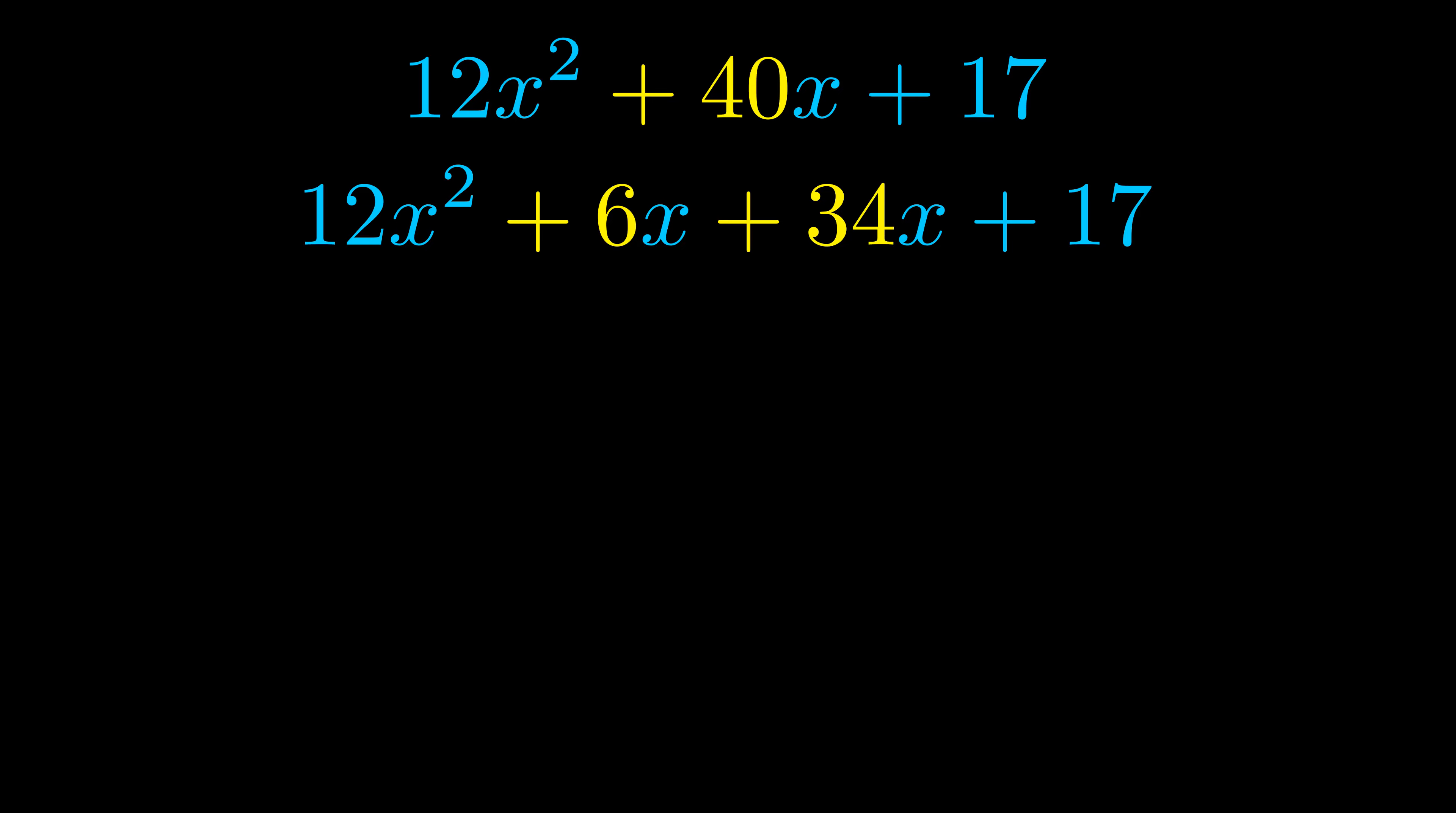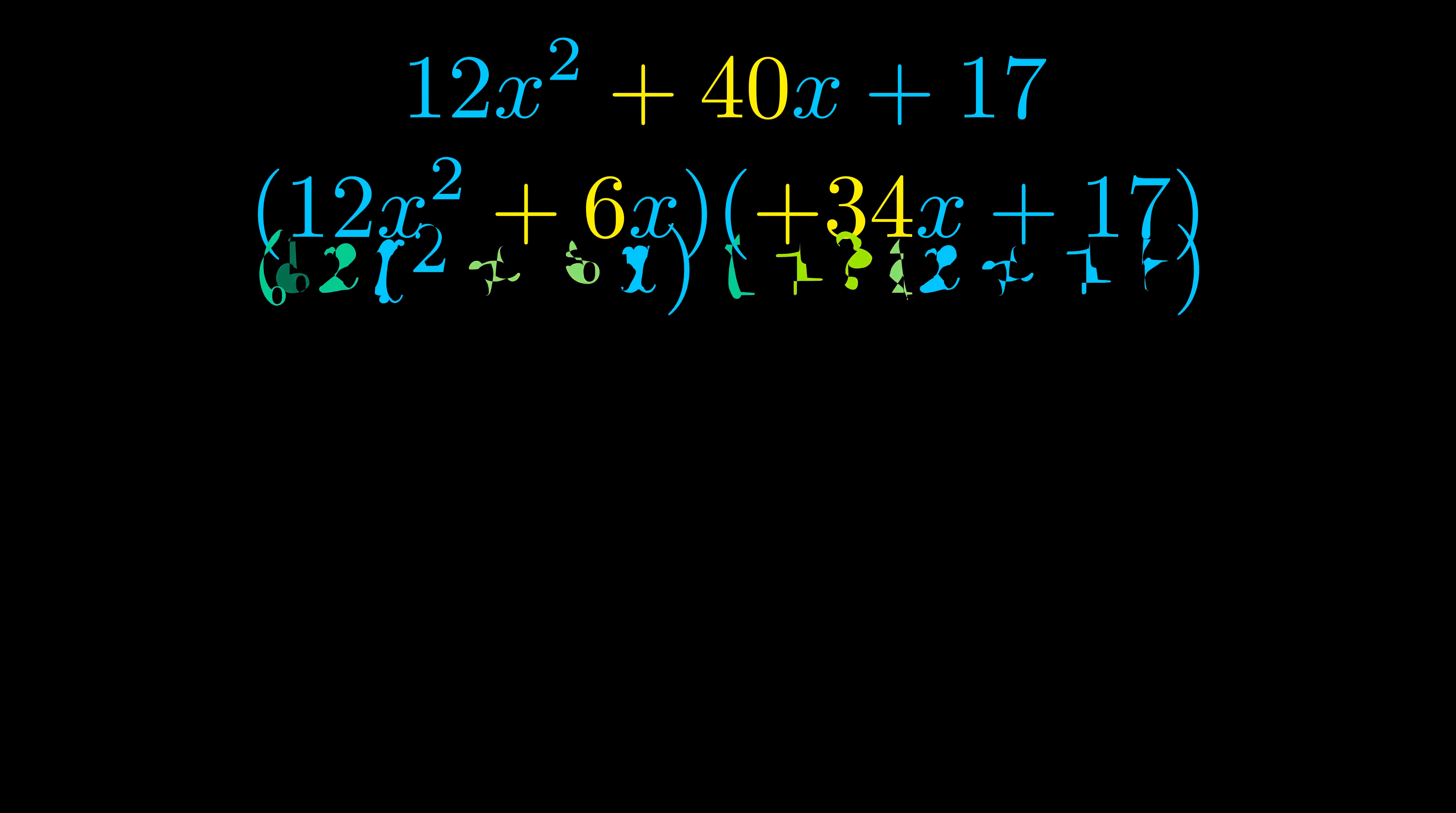Once we've done this we go ahead and we put parentheses around the first term and the last term and we do that so that we can take the greatest common factor out of both terms. We can see the greatest common factor is now outside in green. Notice also how what remains inside of the parentheses is the same in both cases. The blue values are the same.